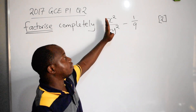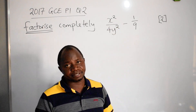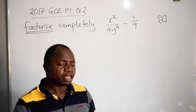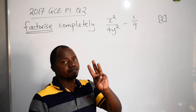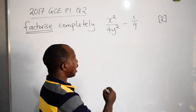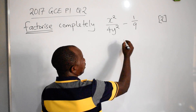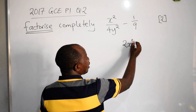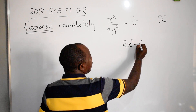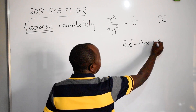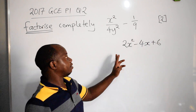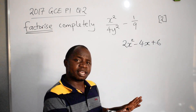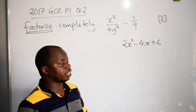Quadratic factorization has three terms. For example, 2x squared minus 4x plus 6 — one, two, three terms. When they say factorize this, you know you are dealing with quadratic factorization.